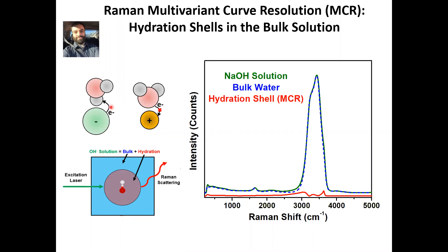This is because of a little bit of charge transfer that occurs from the anion onto anti-bonding orbitals on the water. In the example shown here, I have dissolved a sodium hydroxide salt in solution. A gentleman from Purdue named Dorbin Amutz has given us an algorithm to extract information on the hydration shell.